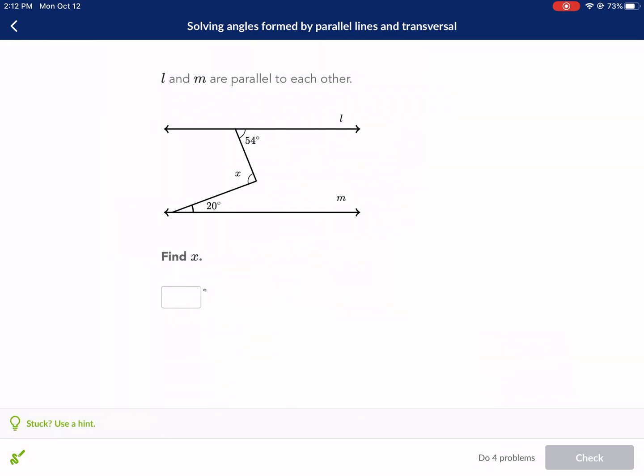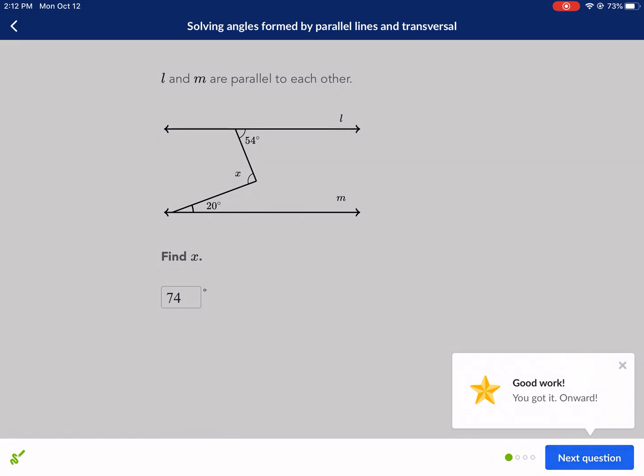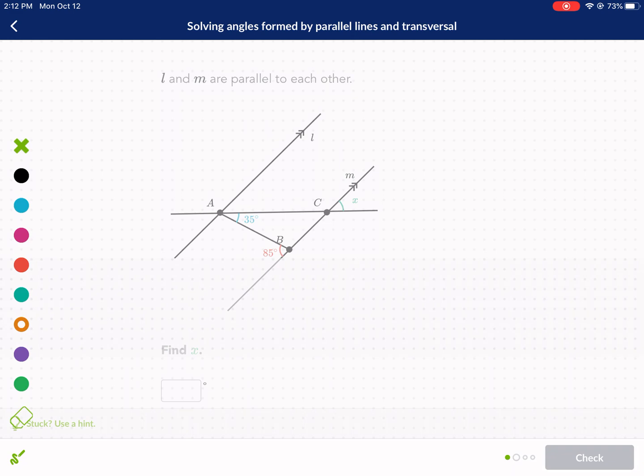I used the wrong color, but you guys get the point. 74 degrees. Next question. L and M are parallel to each other. This time you see the carrots. That's great. They should have done that on the other one. Maybe they did and I missed it. But we're asked to find x again.